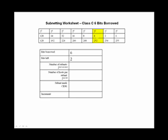If there are six bits borrowed, there are two bits left because I only have eight bits to play with in a Class C license. My number of subnets is two to the bits borrowed, two to the sixth is 64. My number of hosts per subnet is two to the bits left, or two squared, which is four. My subnet mask I get from the table: 255.255.255.252.